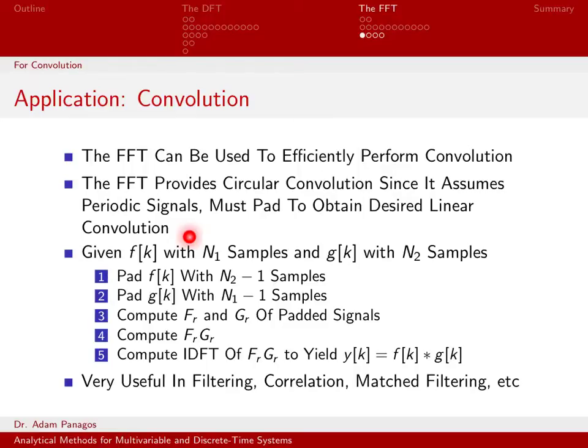But we typically want linear convolution the way that we think about convolution in our linear systems classes. So to actually get the right answer, something like y[k] = f[k] * g[k], you have to make sure that you pad your signals with the appropriate number of samples so that you get out a linear convolution and not a circular convolution.